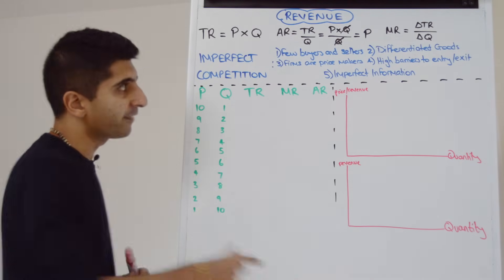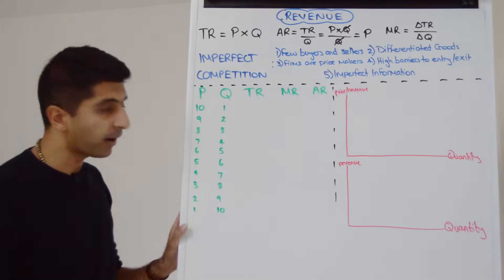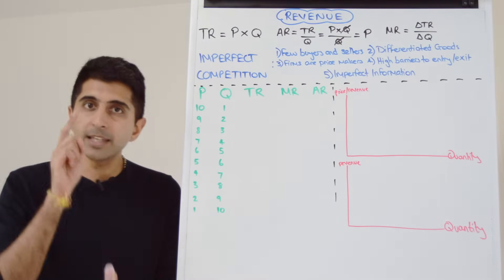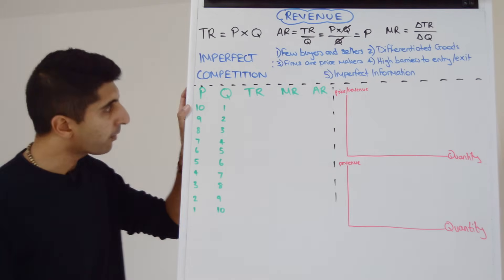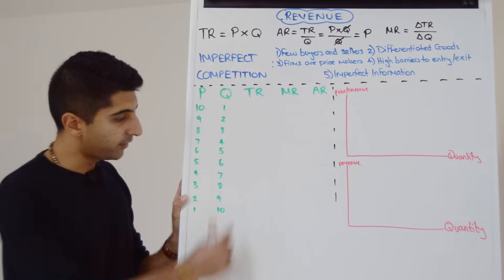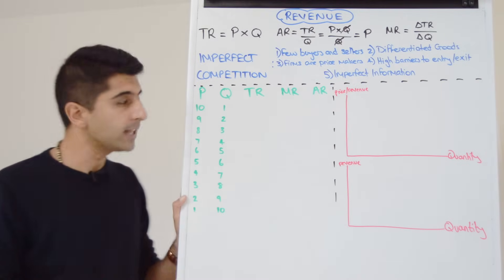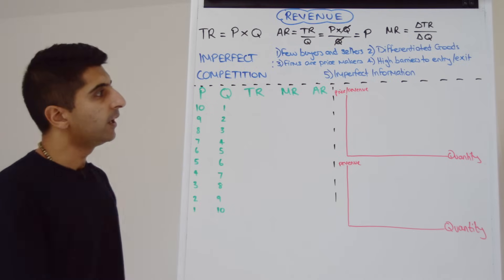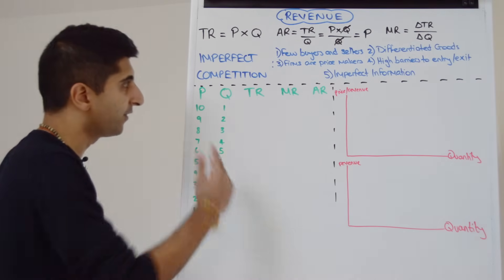The key thing is that firms are price makers. We can see now that we've got different prices being charged by the firm. But crucially, they are going to be governed by the law of demand. So at high prices, quantity sold is going to be low, and at low prices, quantity sold is going to be higher. But we want to focus on revenue. So let's calculate TR, MR and AR given these figures.